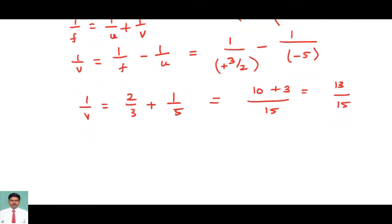But what I want is the v value. v is equal to 15 by 13, so plus 15 by 13 meters, that is equal to 1.15 meters.